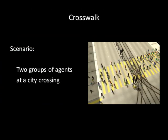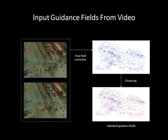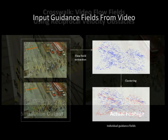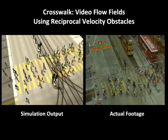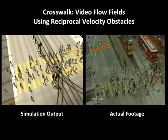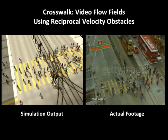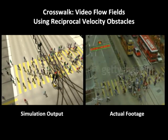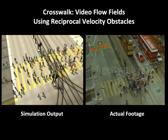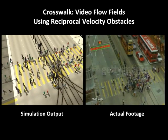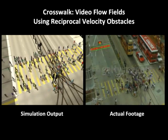This simulation shows pedestrians crossing at a regular crosswalk. Our method allows the user to edit the simulation in a variety of ways. In this particular example, flow fields are extracted from actual footage of pedestrians at a crosswalk. The user can then import these flow fields into the crowd simulation framework to generate more realistic behavior. This is also an important step towards data-driven crowd simulation.